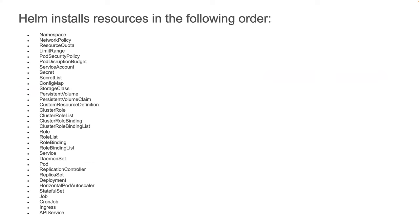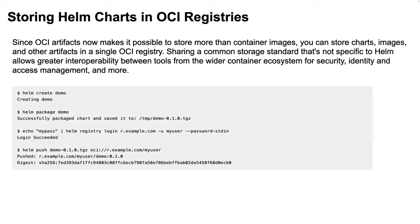Helm has defined a priority order. It looks for Kubernetes resource files in a specific order and installs them in that specific order. For example, it will first deploy a pod, then a deployment, then a service, and finally ingress and API service. This is the order Helm follows when deploying packages. This can be an interview question for you.